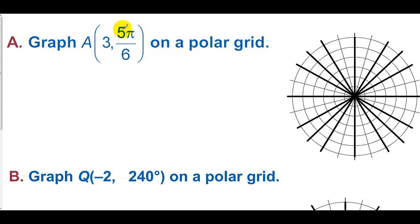Graph the point (3, 5π/6) on a polar grid. Let's go to the third circle, a circle with a radius of 3, and then go over to 5π/6. So there's point A right there.